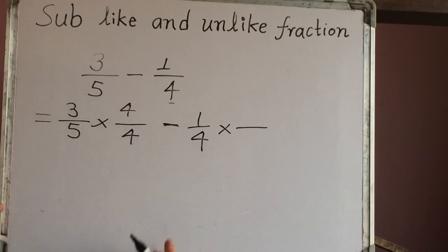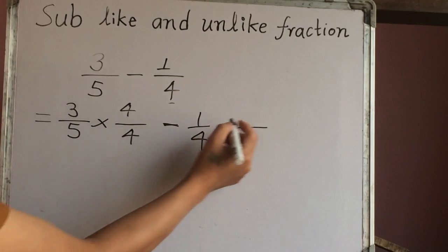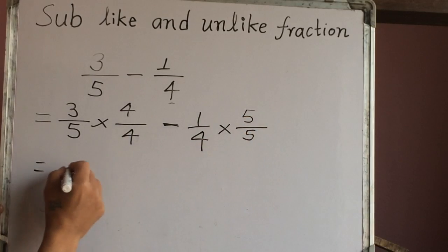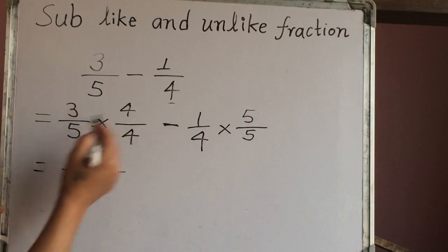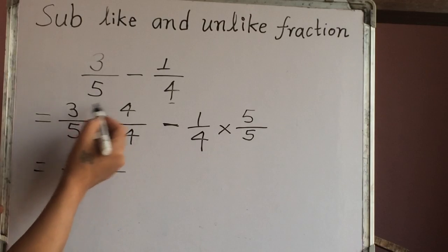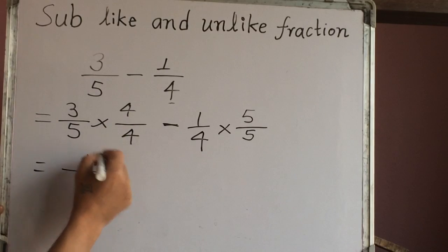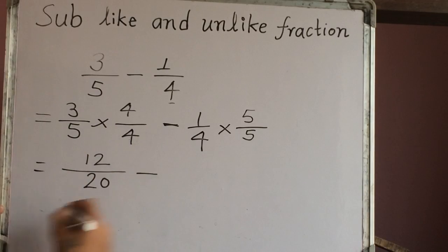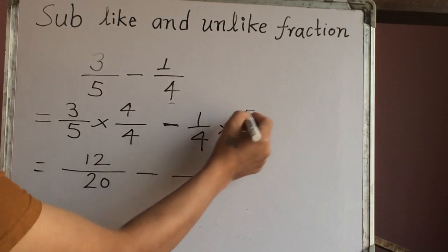And the second fraction should be multiplied by the first denominator, that is 5. Now we have a fraction line. Let's multiply: 3 times 4 is 12, 5 times 4 is 20. Minus fraction line: 1 times 5 is 5, 4 times 5 is 20.